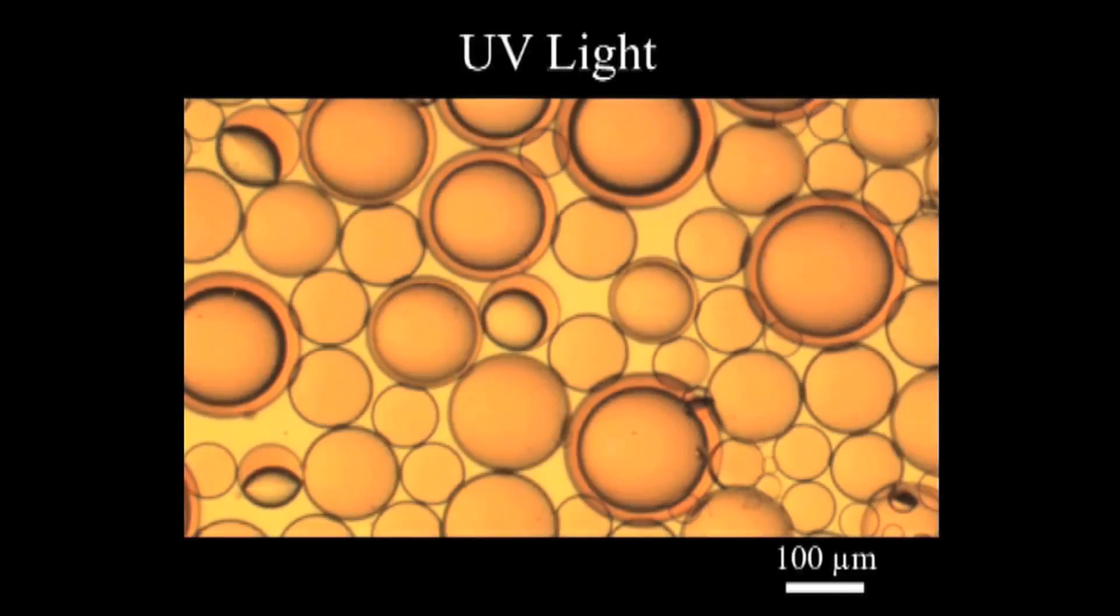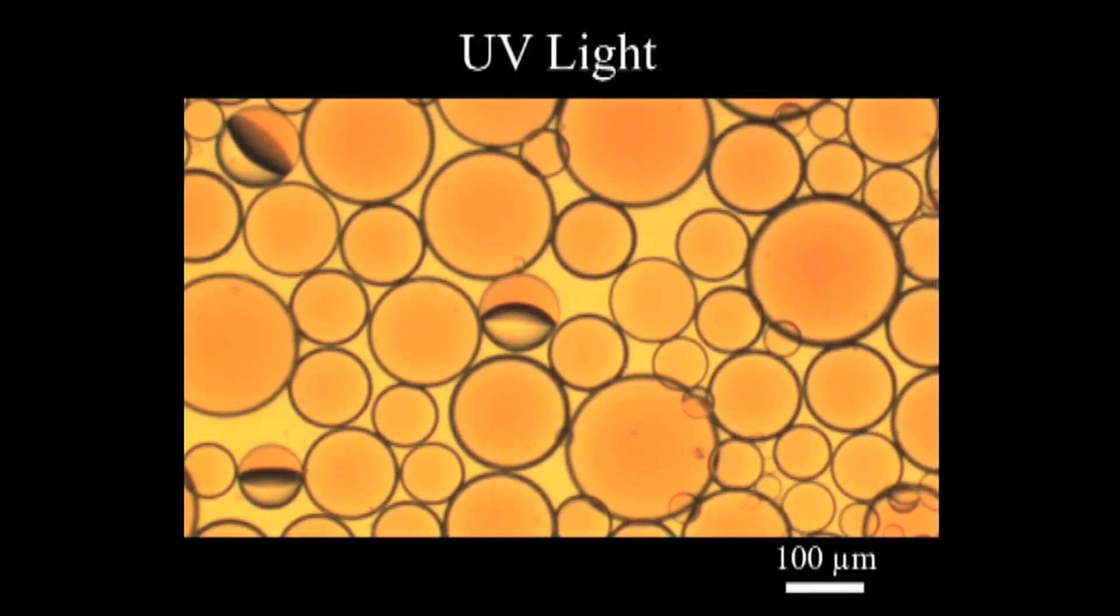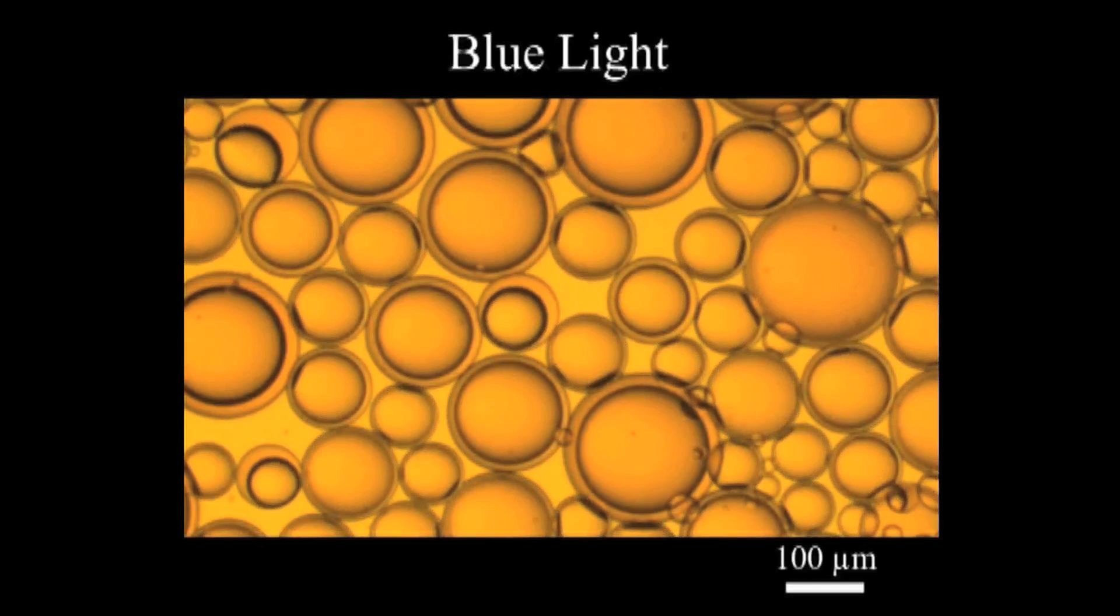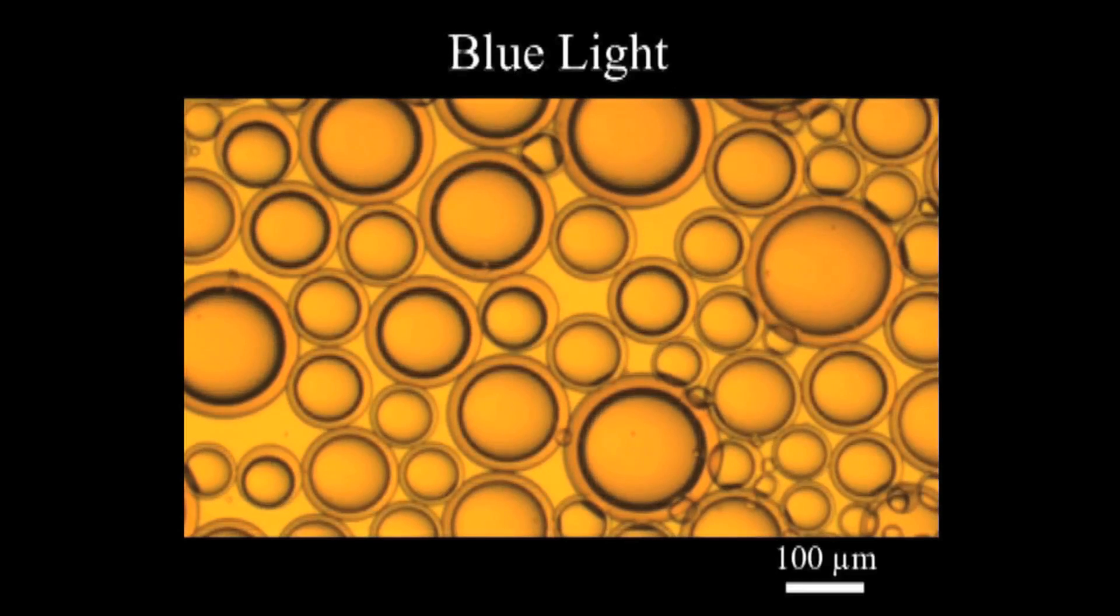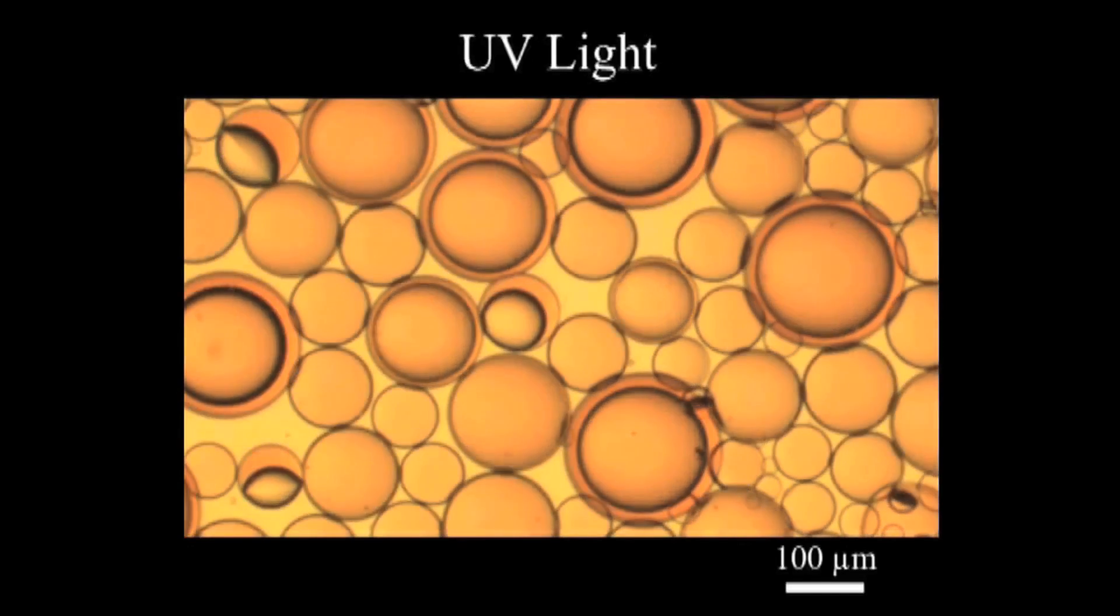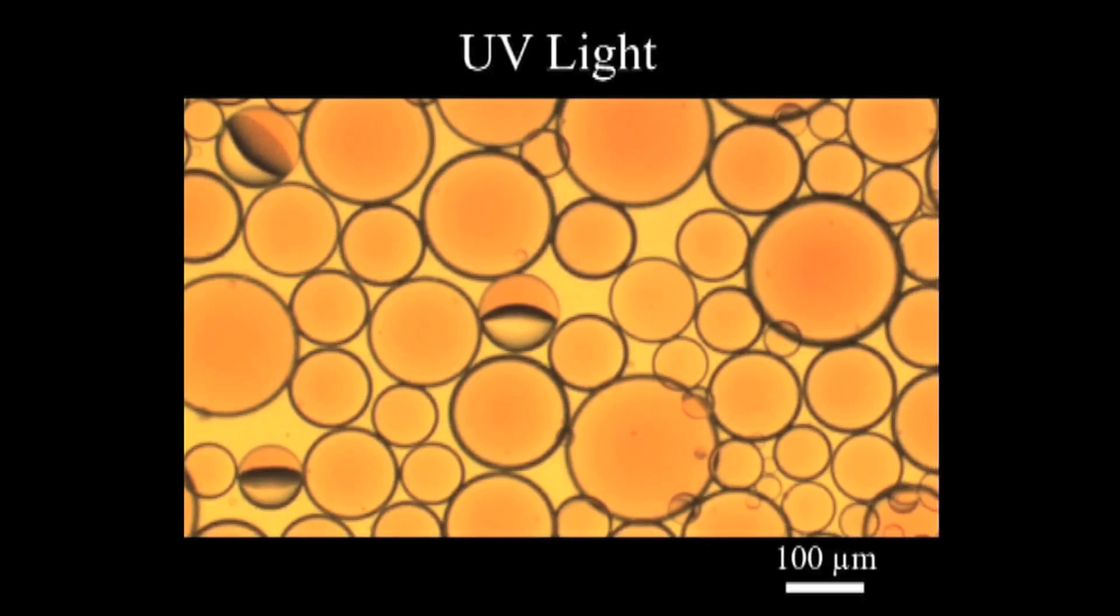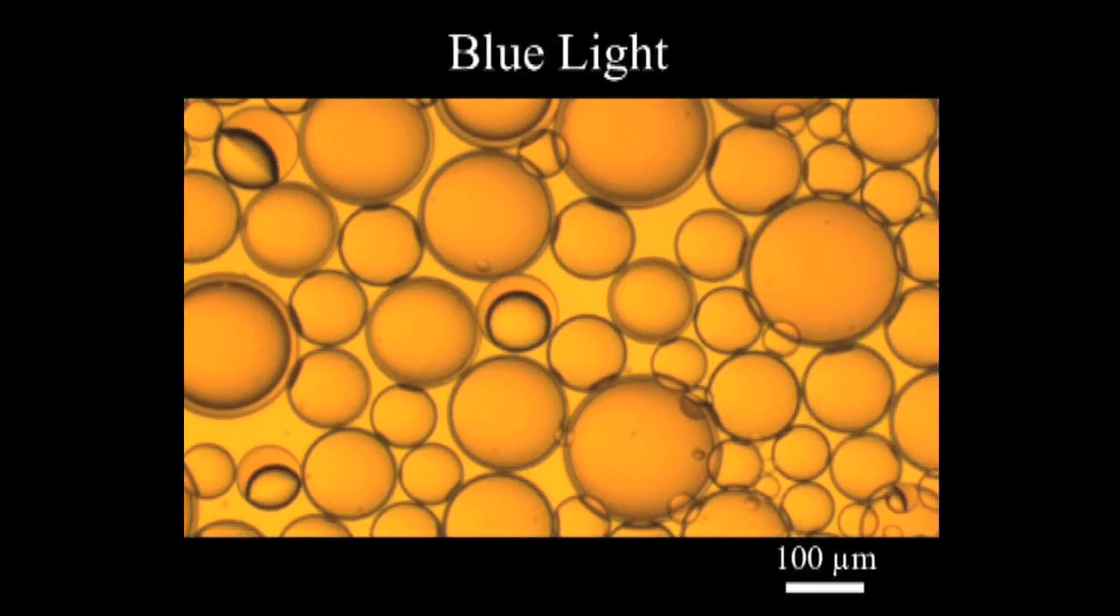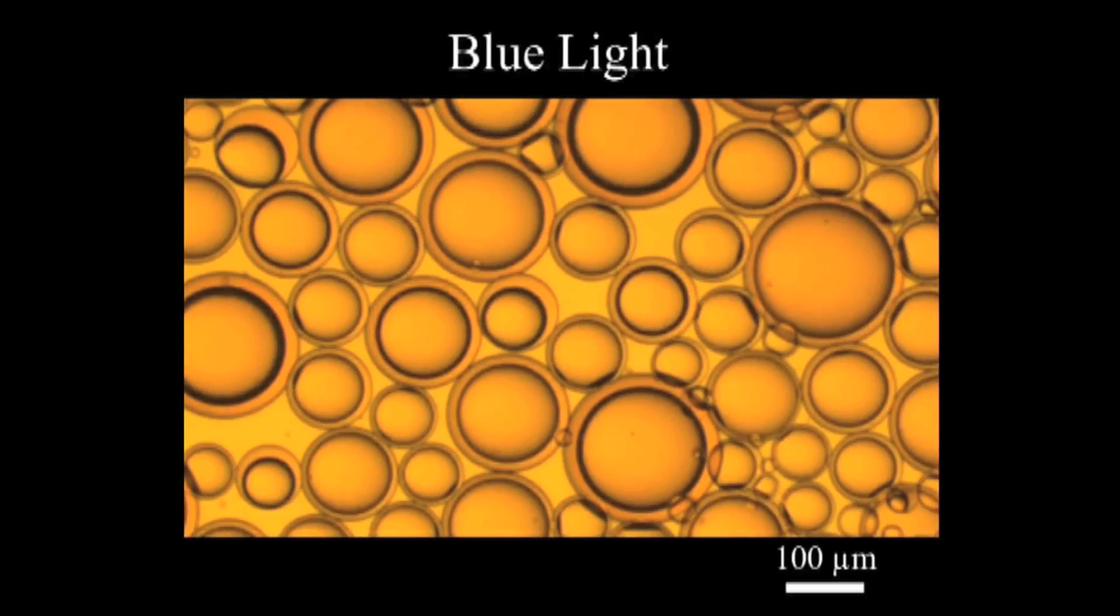These emulsion droplets are basically like little packages. You can open and close these packages depending on the types of soap you use. One very interesting example recently has been to use a particular type of soap that reacts to light. When we turn on a light we can make the soap's usefulness change and therefore we can open or close the box just using light.